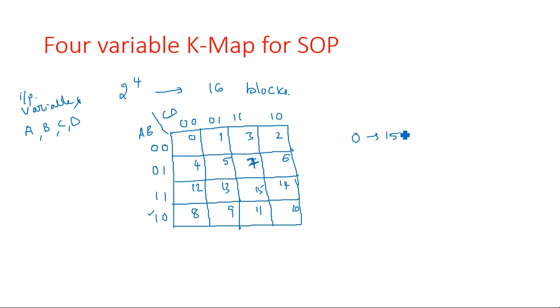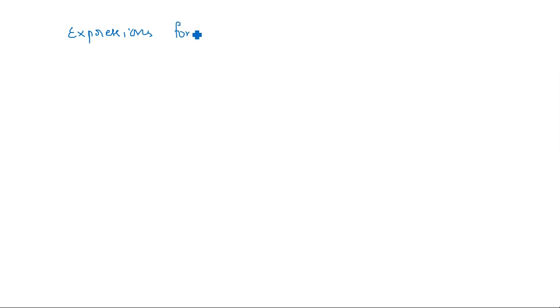So 0 to 15, total 16 blocks, to represent the 1s. Now what will be the Boolean expression corresponding to each block? I am taking the block numbers 0 to 15 directly and listing the Boolean expressions for each.